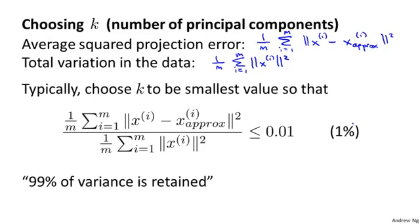When we're trying to choose k, a pretty common rule of thumb for choosing k is to choose the smallest value so that the ratio between these is less than 0.01. So in other words, a pretty common way to think about how to choose k is we want the average square projection error, that is the average distance between x and its projection, divided by the total variation of the data. We want this ratio to be less than 0.01 or to be less than 1%. And the way most people think about choosing k is rather than choosing k directly, the way most people talk about it is what this number is, whether this is 0.01 or some other number.